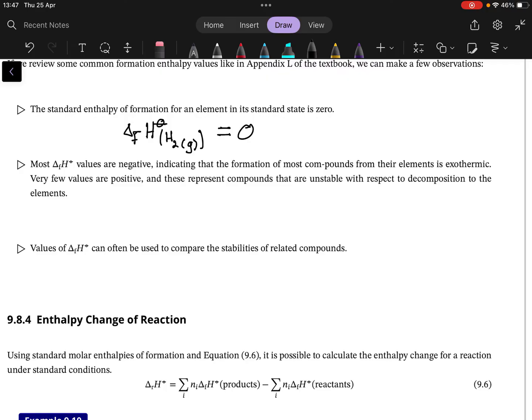So whenever you have a species like hydrogen, its enthalpy of formation is zero. Other things to note: enthalpy of formation values have to be negative for a compound to be stable. So there needs to be a release of energy for bonds to form.